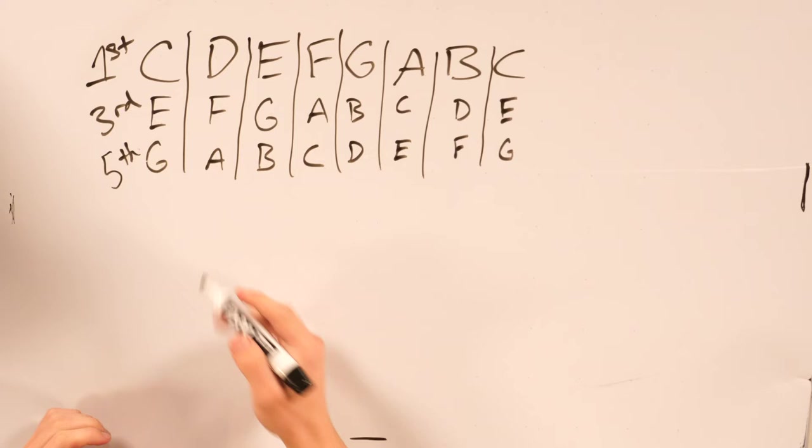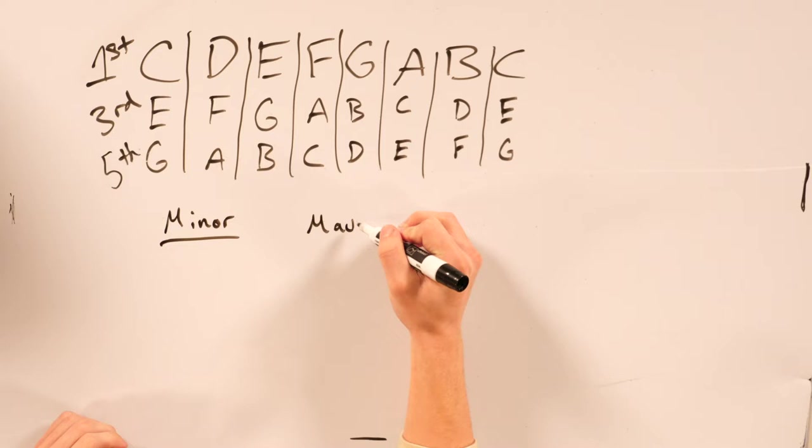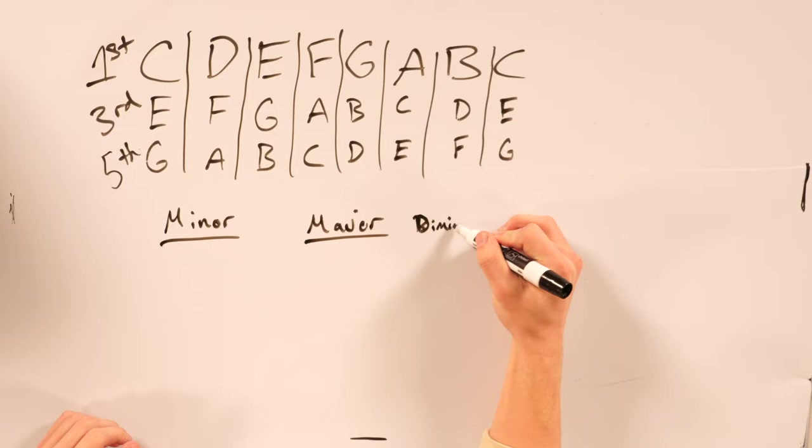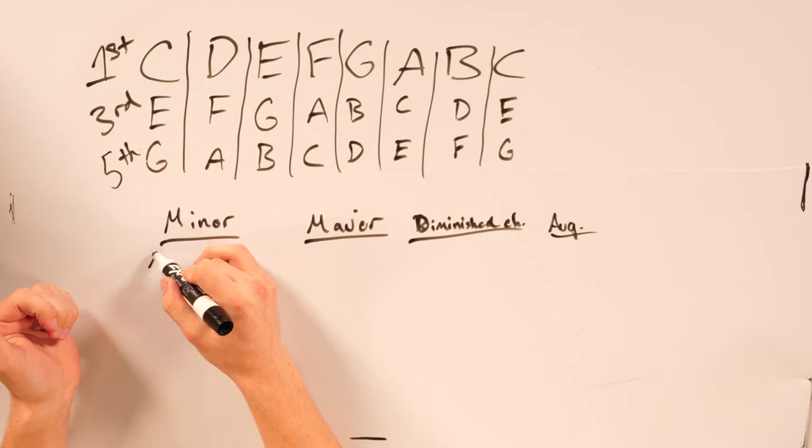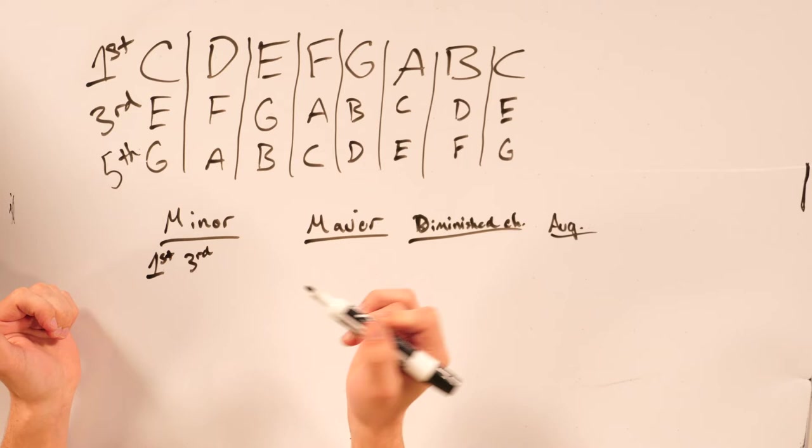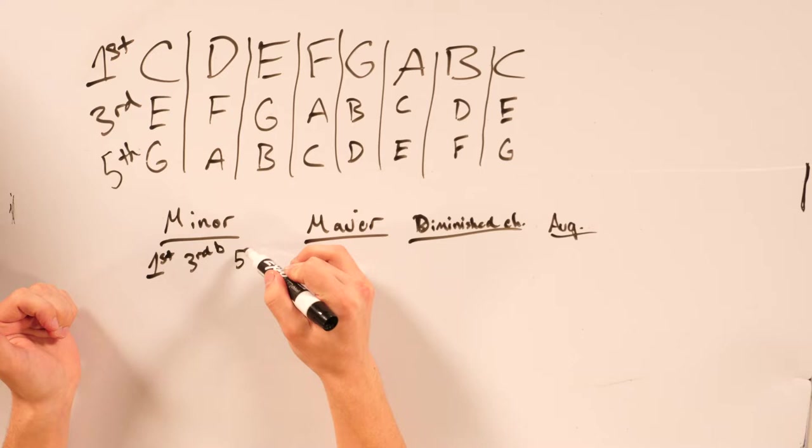These chords can be changed between minor chords and major chords, diminished chords, and augmented. So with making minor chords, what you need to do is take the first, leave it the same, and then for the third you would flat the third or take it down a half step, and leave the fifth the same.